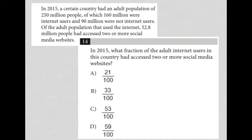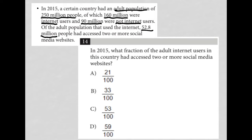This question starts off with some preliminary information. In 2015, a certain country had an adult population of 250 million people. Of those, 160 million were Internet users and 90 million were not Internet users. Of the adult population that used the Internet, 52.8 million had access to two or more social media websites.